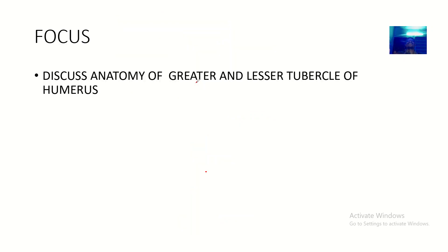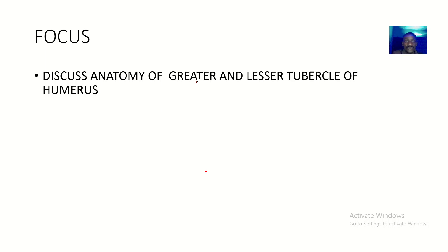That's the anatomy of the lesser tubercle and the greater tubercle. We spoke about their locations, their prominence, and the line dividing them — the intertubercular groove. I hope you guys enjoyed this tutorial. Love you guys, see you very soon — bye for now.